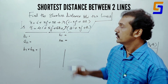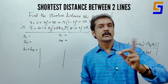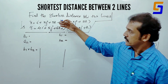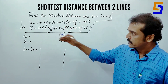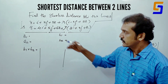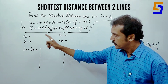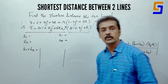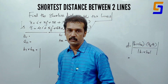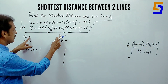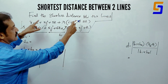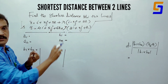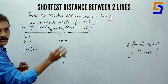This is vector equations and Cartesian equations. This is the vector equations. We have 4 names: A1 and A2, B1 and B2. This is the first line — A1 and B1. A2 and B2 is the second line.